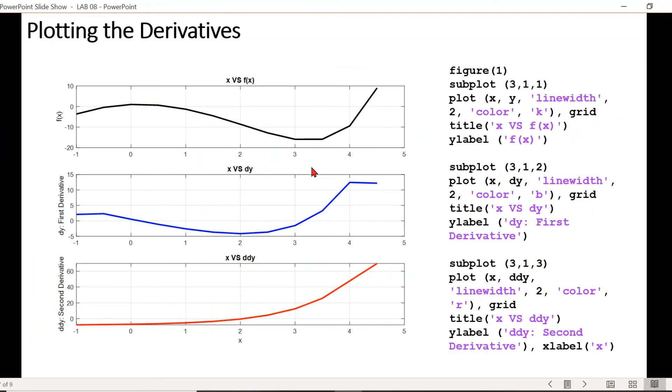After we are done with evaluating first and second derivatives at those 12 data points that have second-order accuracy, we can plot them sequentially in MATLAB by using the subplot command. Here the first plot shows the function with respect to the data points. The second plot is for the first derivative and the third one is for second derivative at the corresponding data points.